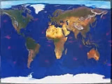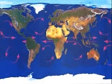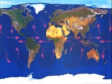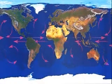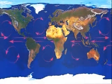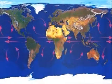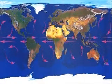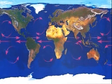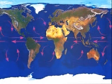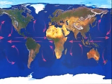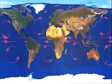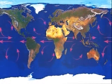Ocean currents caused by prevailing winds are called drift currents. In the Northern Hemisphere, the circulation of the oceans is clockwise, and in the Southern Hemisphere, the currents are anticlockwise.